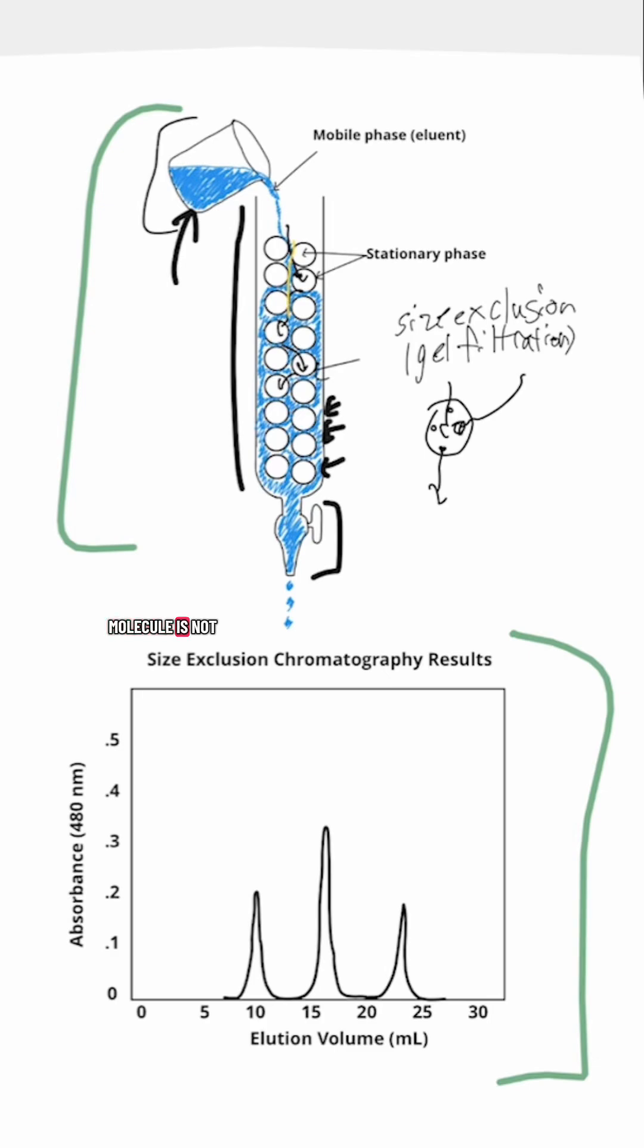Meanwhile, a larger molecule is not going to get trapped that many times, if at all. So let's say it gets trapped just once right here and then it makes its way out of that bead and out of the column.